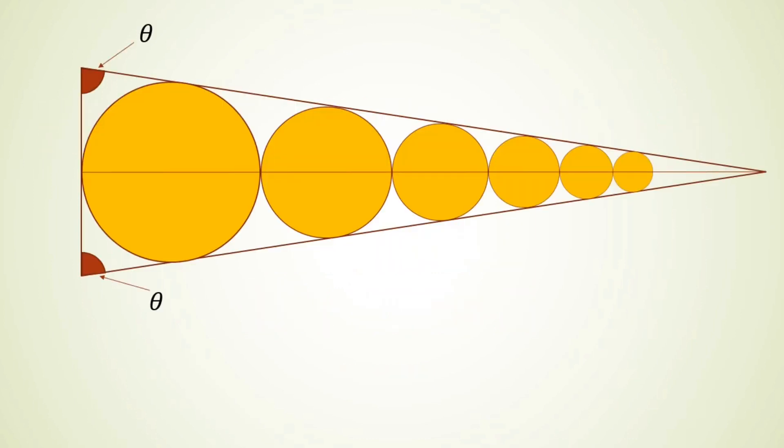So here is the solution. Let's draw a direct common tangent to the first two circles. Now if we analyze only that part of the triangle which is on the left side of this tangent then we can clearly see that the triangle that we get is exactly same as the previous one.